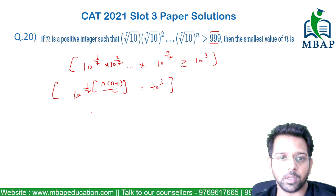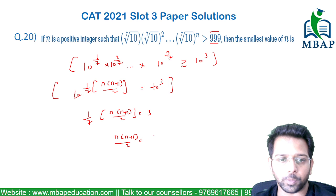Taking 10 common out, you will say this is 1/7. n into n plus 1 divided by 2 should be equal to 3, or n into n plus 1 divided by 2 should be equal to 21.